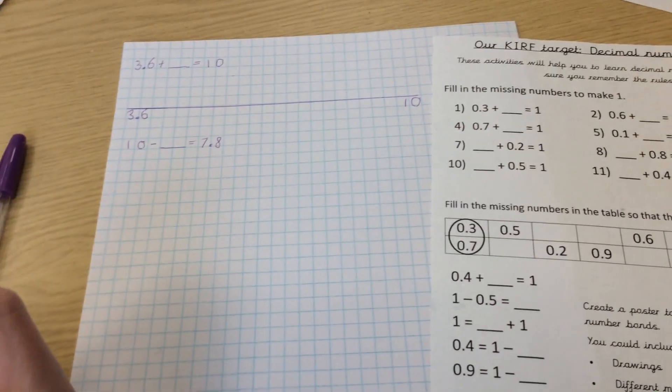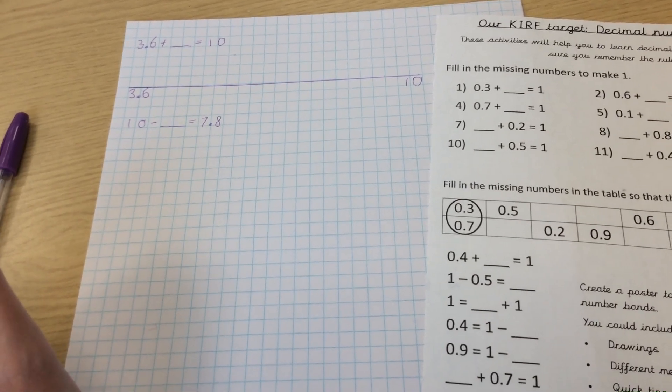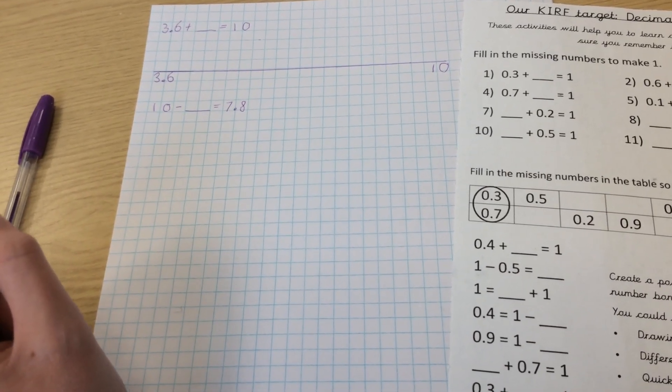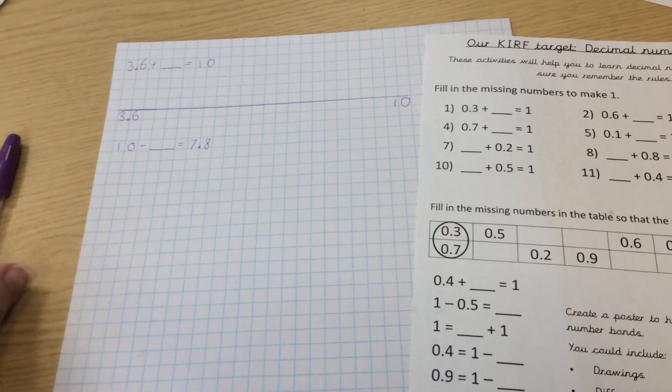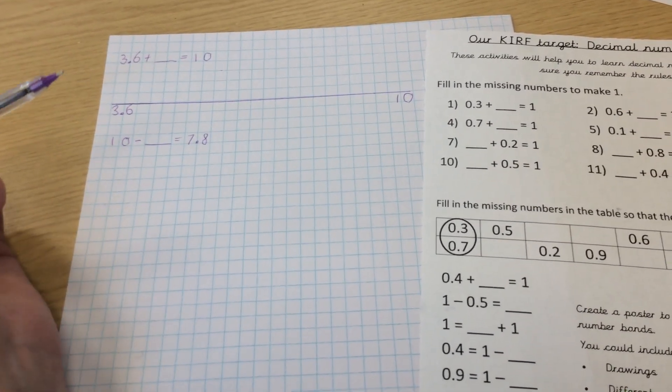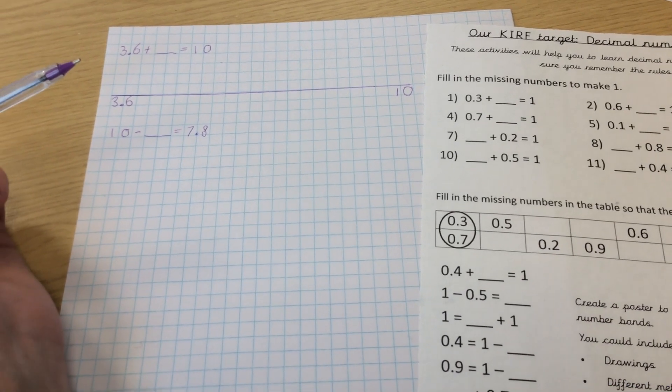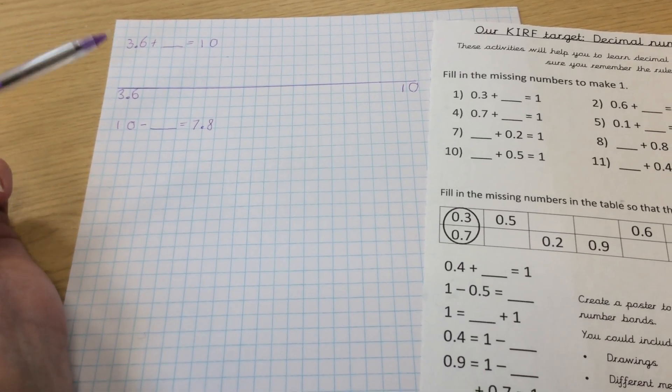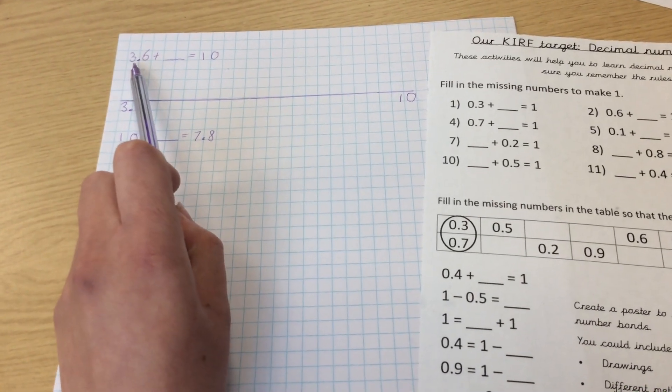I'm just going to work through a few examples with you and a few different strategies that you can use to help you work out these decimal number bonds to 10. One way that you could work it out is using your number bonds to 100, which we focused on at the beginning of the year in September.